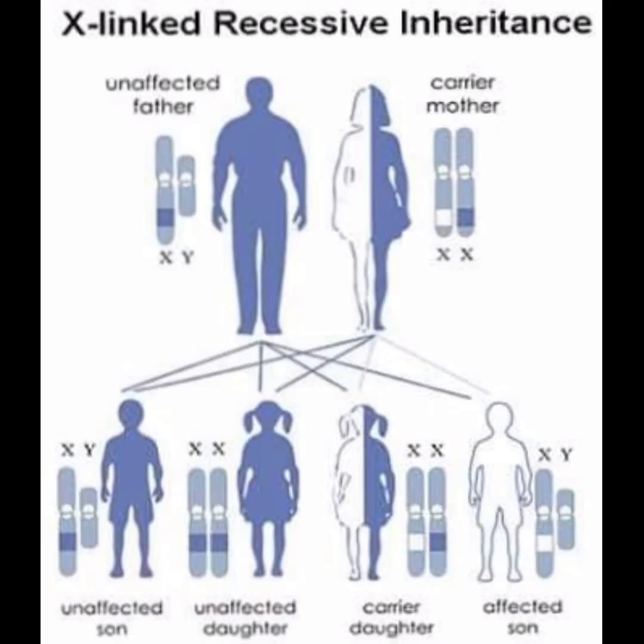Now let us look at the picture of X-linked recessive inheritance, where the father is unaffected 100% and the mother is a carrier of the disease. We can see that two of their children are unaffected, one of them is a carrier, and there is also one affected son.